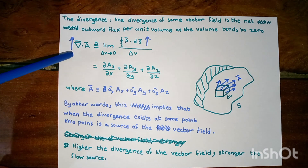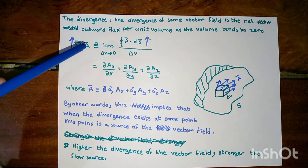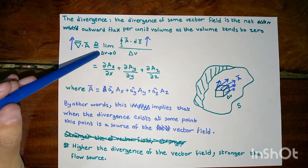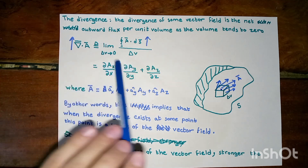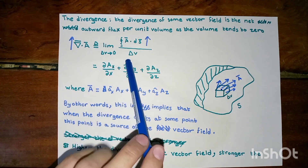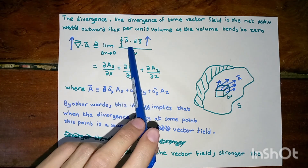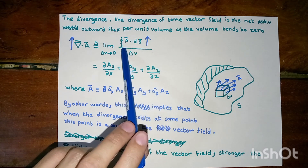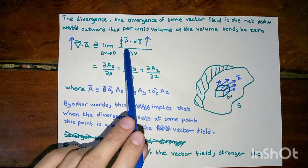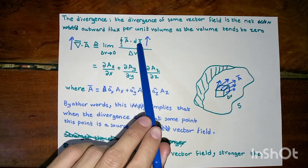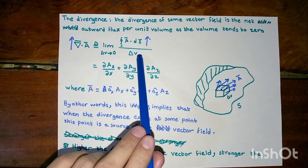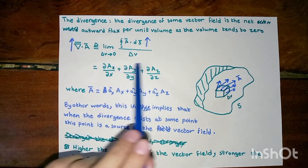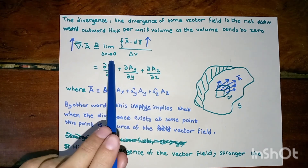Now let us look strictly at the definition of divergence. As illustrated in this formula, the divergence is the surface integration of A with respect to the surface, divided by the volume as this volume tends to zero.